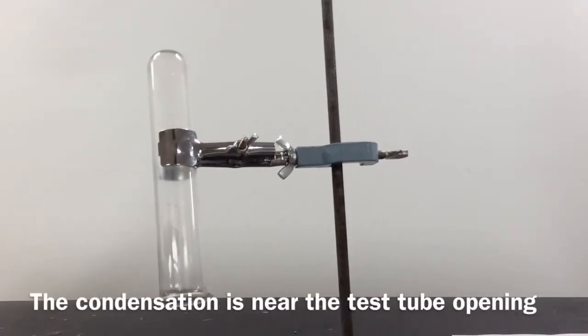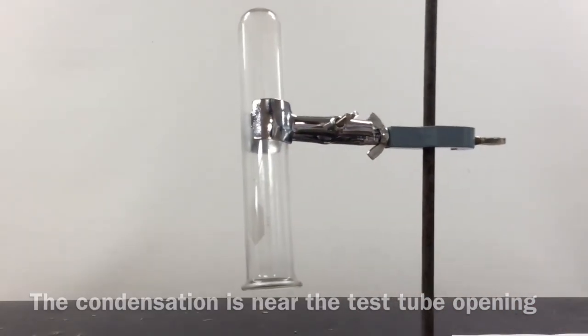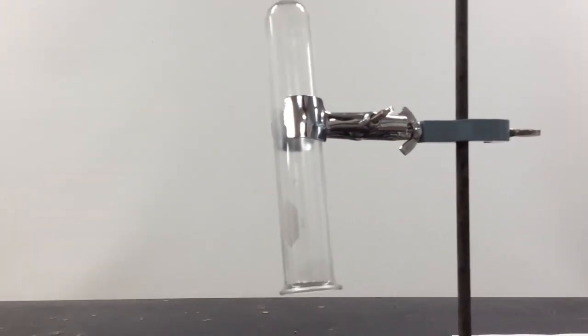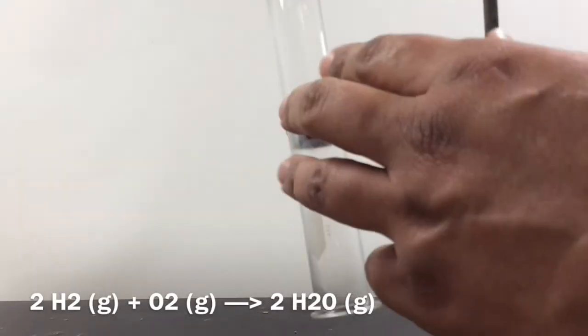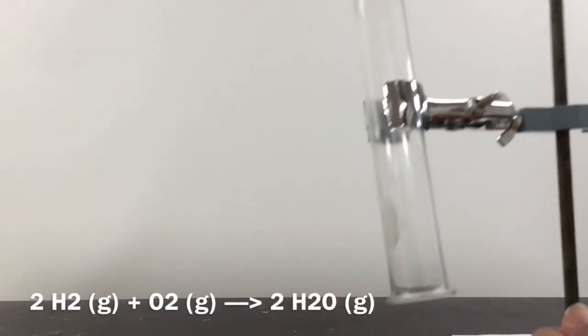It's a little hard to see on the camera, but right inside this test tube, there's a little bit of condensation, which tells us that that hydrogen burned, which means that it reacted with oxygen to form a little bit of water. And so it's a little hard to tell here, but we made a little bit of water.